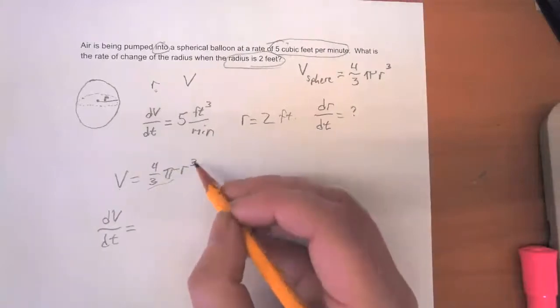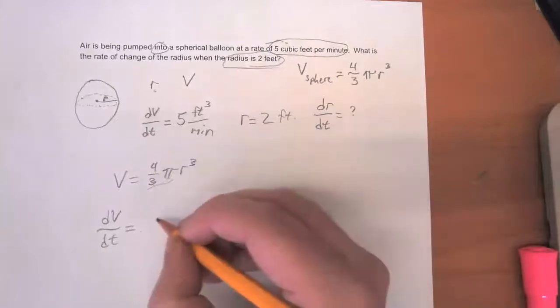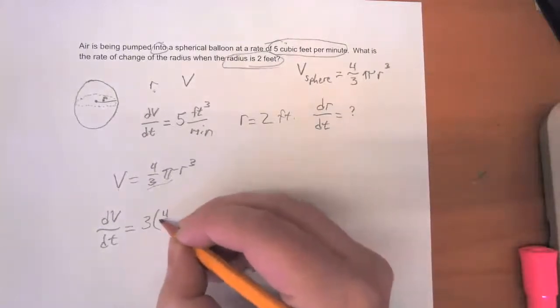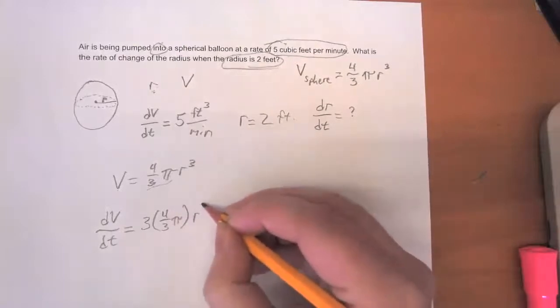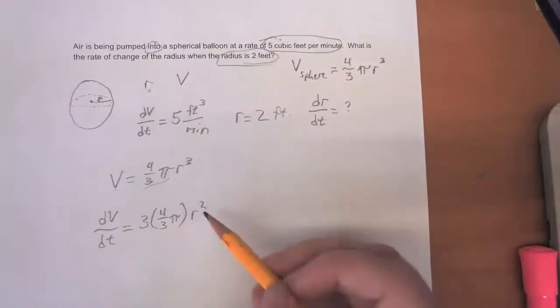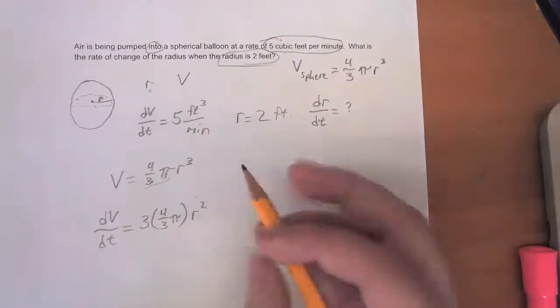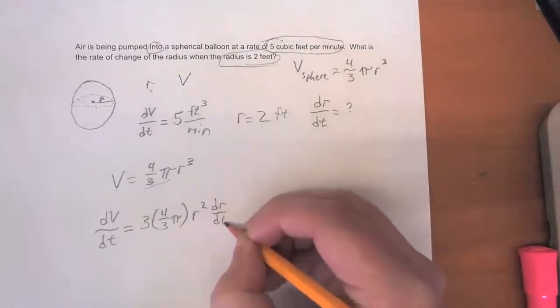So three times four thirds pi times r squared. And then we need to multiply that because we're implicitly differentiating with respect to time. We need to add in this factor of dr/dt.